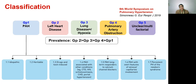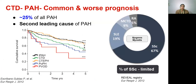Group 1 pulmonary arterial hypertension is mainly contributed by idiopathic in 46% of cases and associated PAH in 50% of cases, as per the REVEAL registry. Specifically about connective tissue disease PAH, this constitutes 25% of all PAH and is the second leading cause. Compared to idiopathic PAH, represented by the black line in the survival curve, connective tissue disease PAH, the green line, has worse survival.